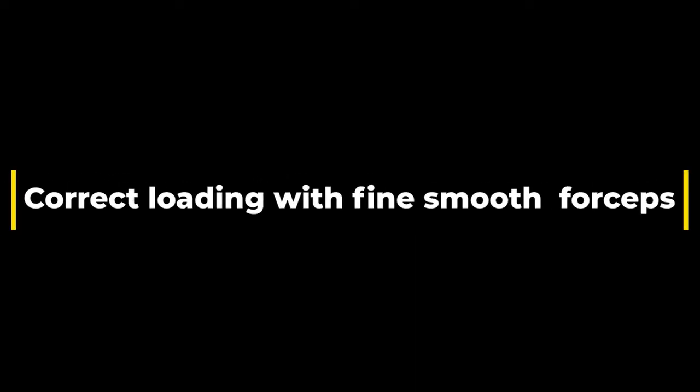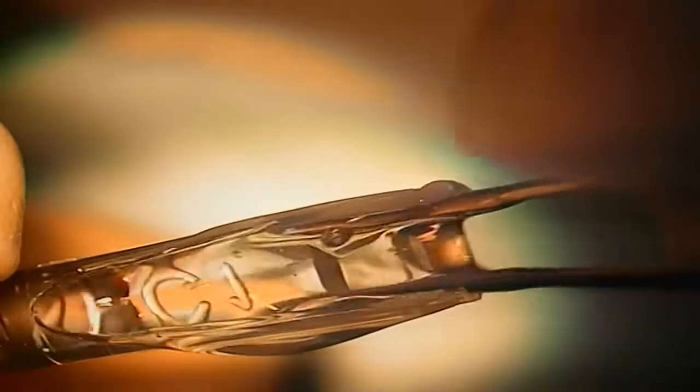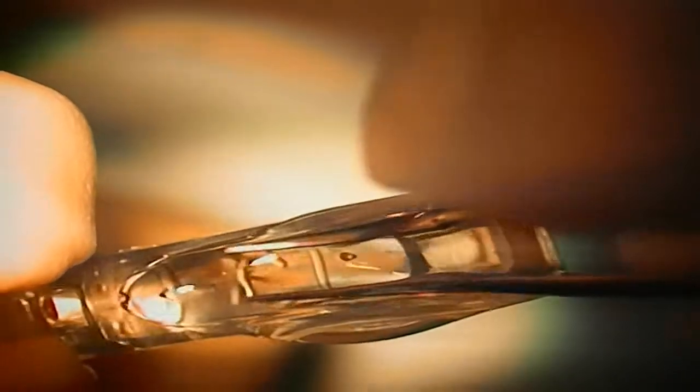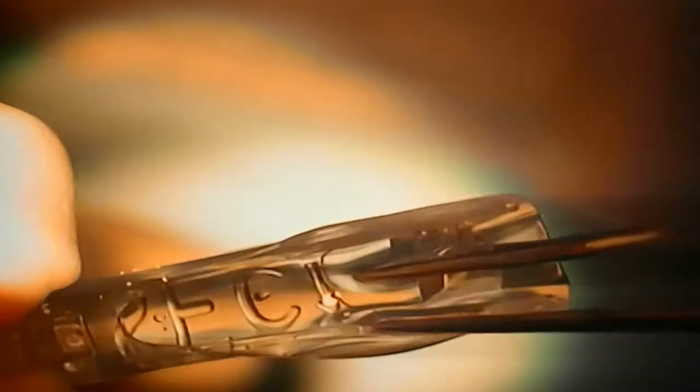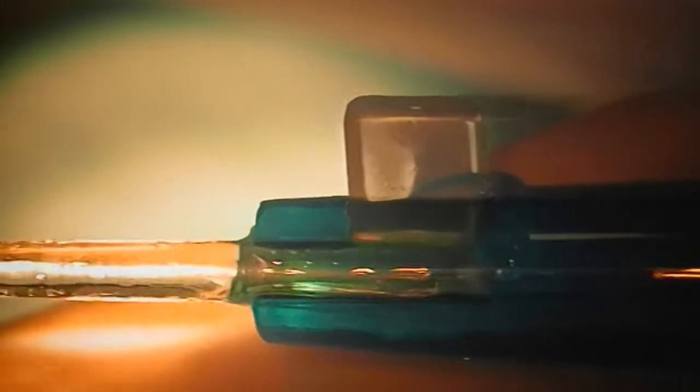So we can also use a much simpler technique with a very simple, smooth forceps like McPherson that we all have. We just fold the lens halfway, use a wet forceps and push it gradually with a half-open forceps, pushing the optic border and the lens will squeeze itself down into the conus.